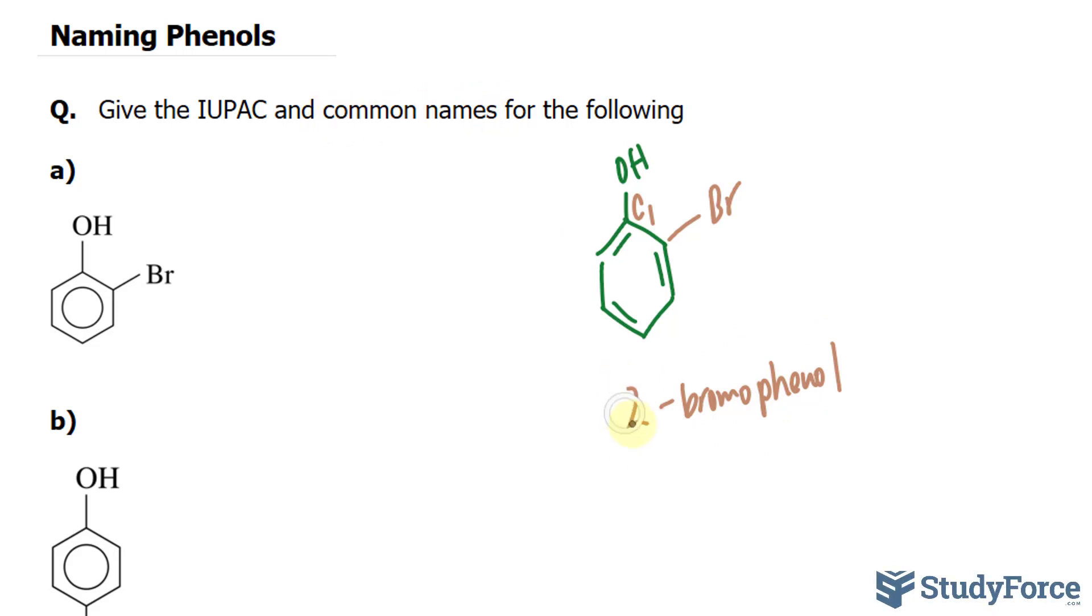To get the common name, we drop the 2. Since the OH and the first substituent occur at 1 and 2, we use ortho, O. And the rest stays the way it is. So when it's between 1 and 2, the substituents, it's ortho.